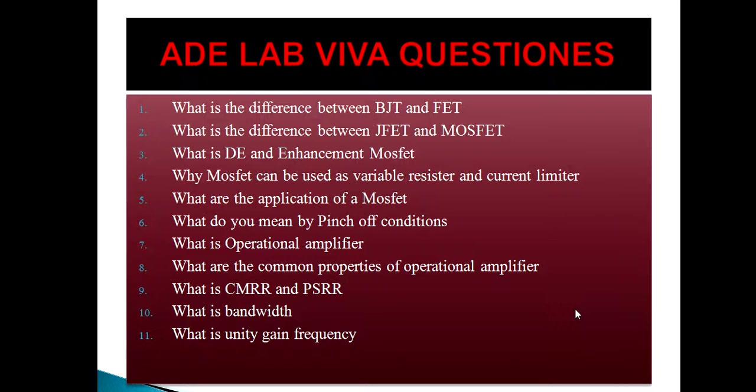What are the common properties of the operational amplifier? The common properties of operational amplifiers are: bandwidth, which is the range of frequency; second one is the slew rate, which defines to what extent the output will change within a particular microsecond; third one is the settling time, which is the time taken by the operational amplifier for the output to settle when you change the input.